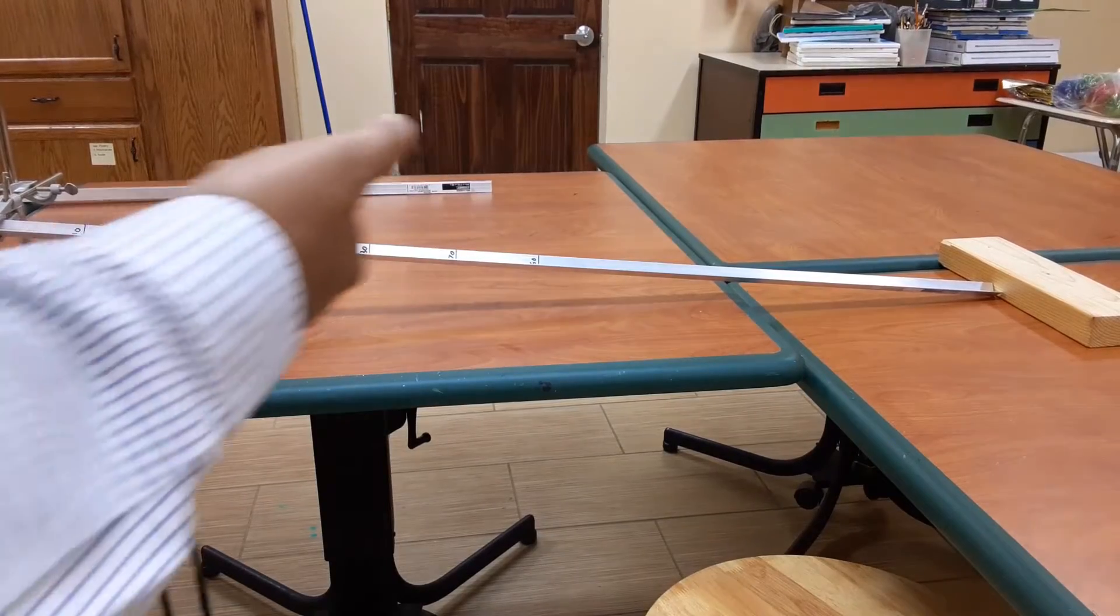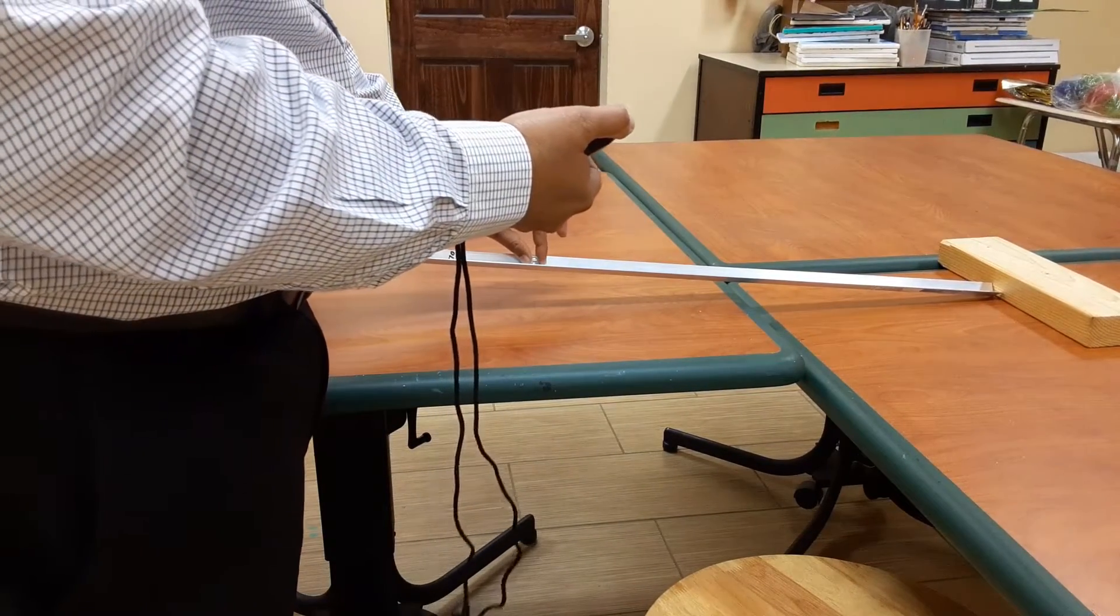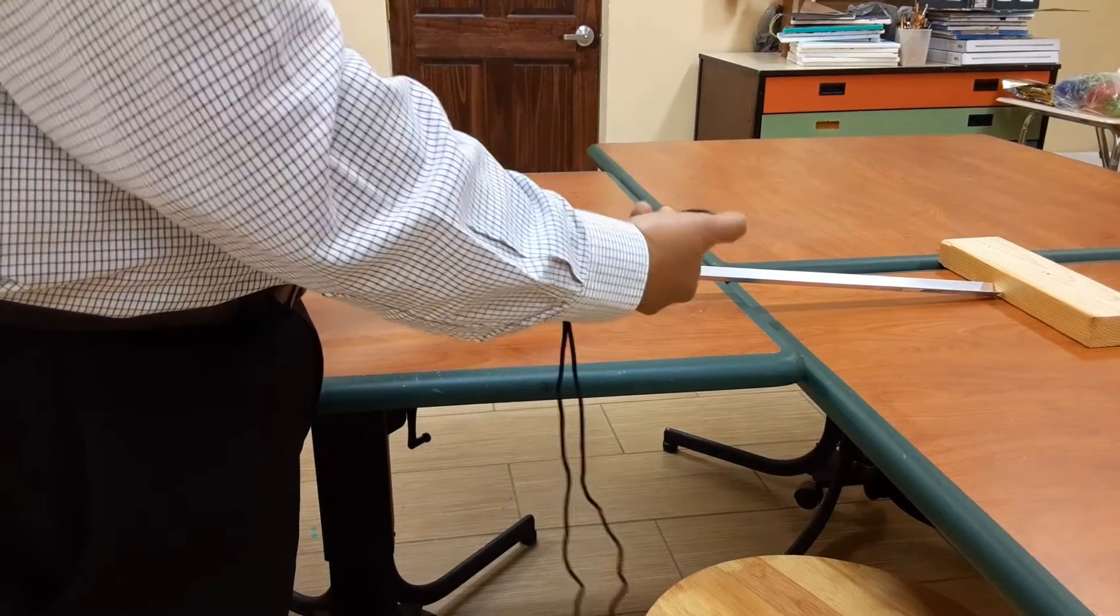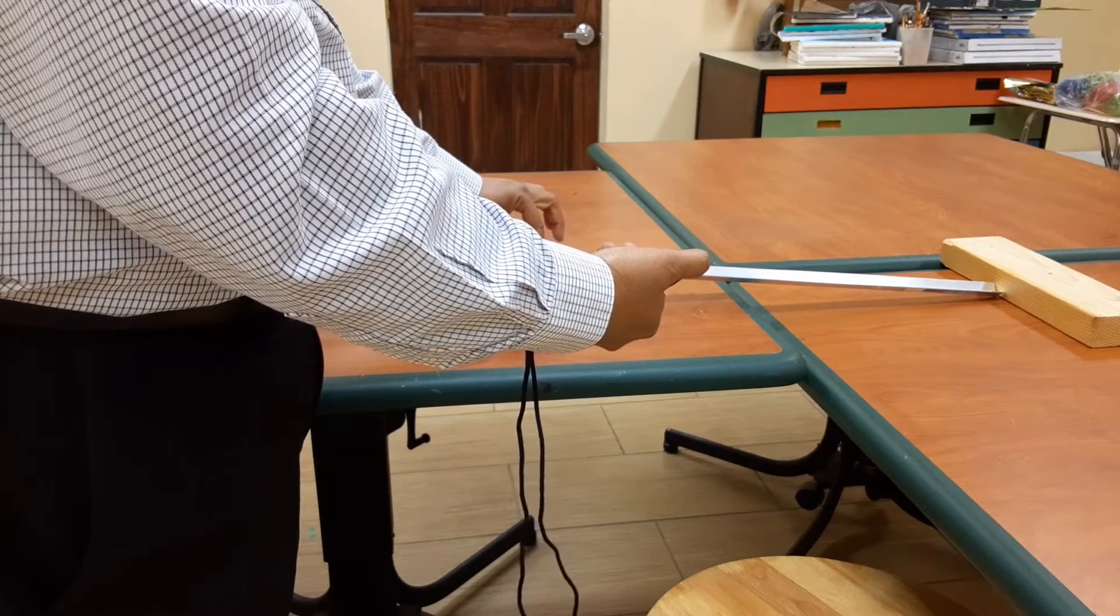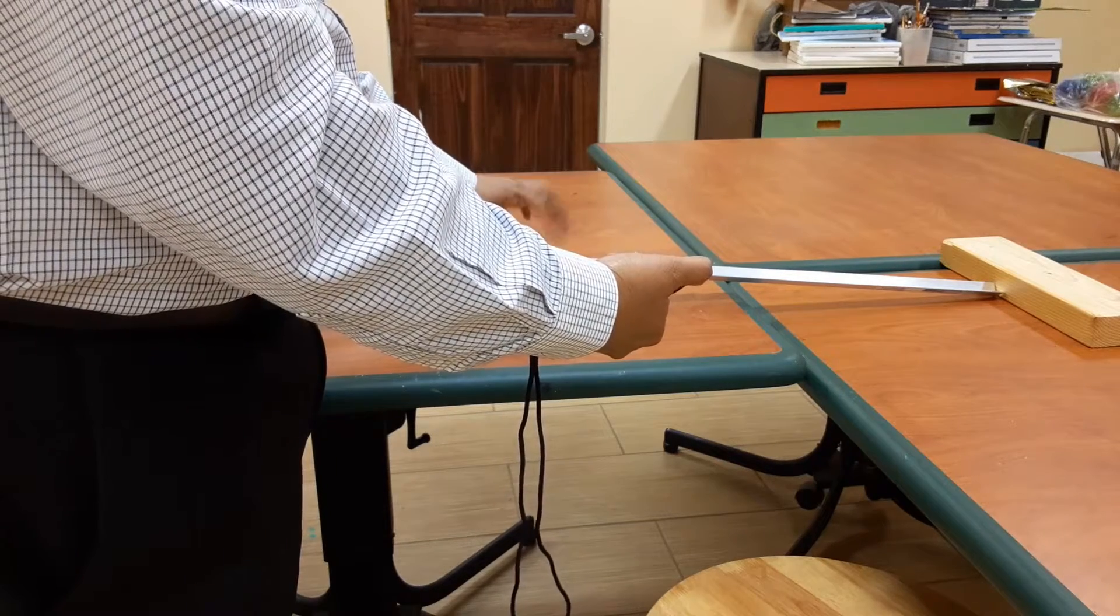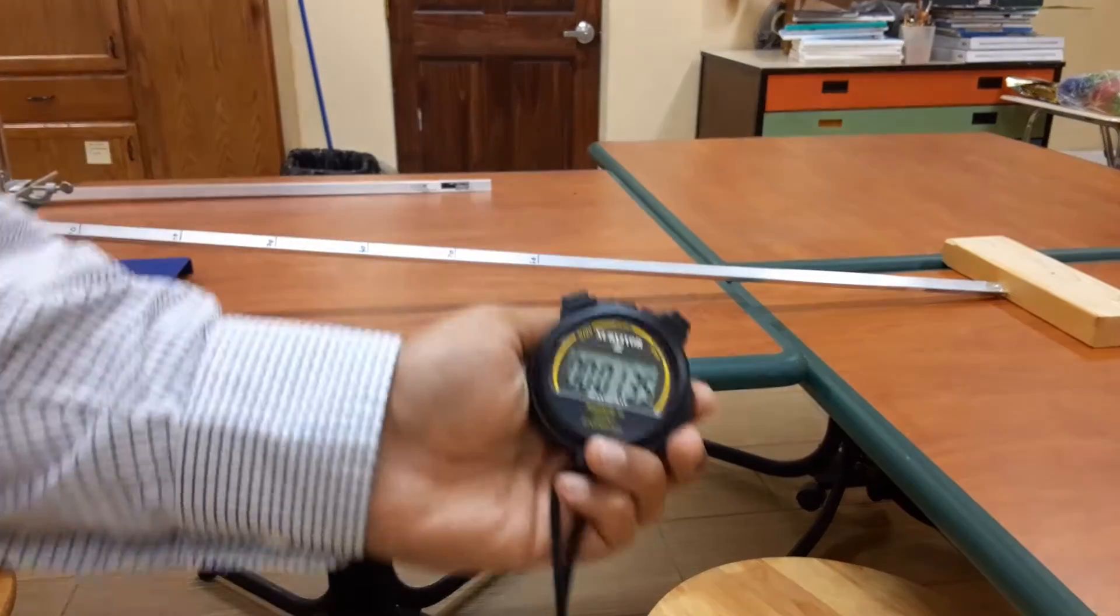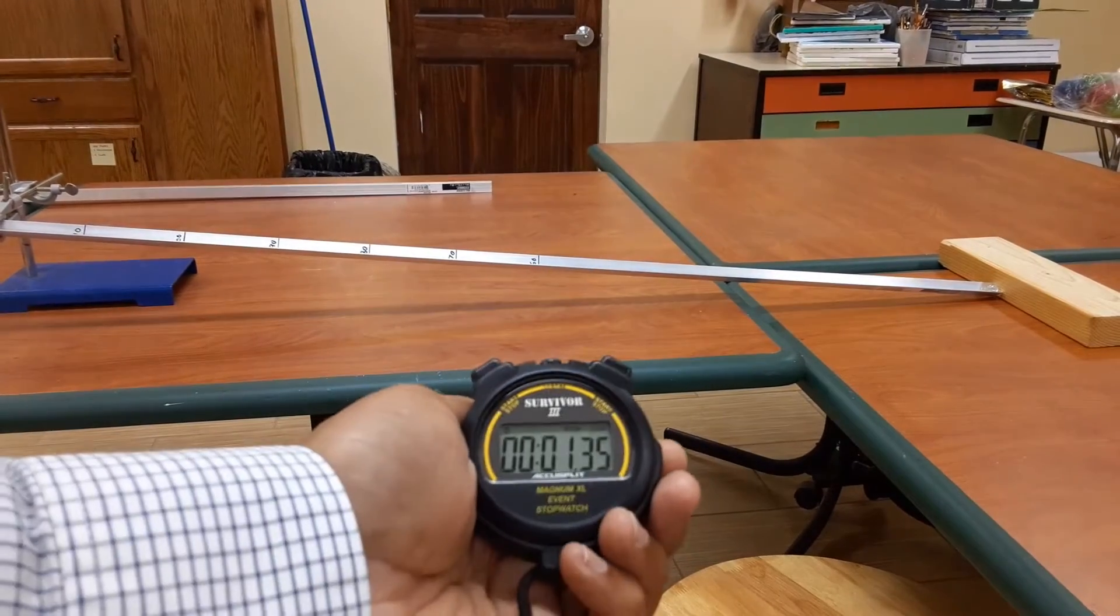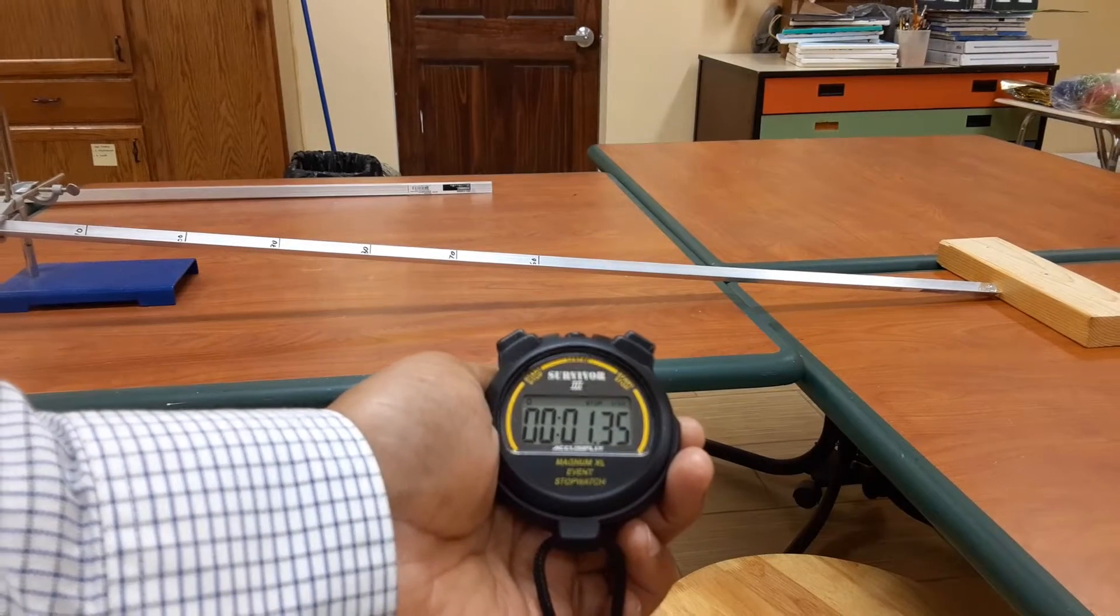So starting with L is equal to 60 centimeter or 0.6 meter. So I have a stopwatch. I will release the ball, and I will see how much time the ball takes to go hit that block of wood. So 1, 2, 3. So I can see that the time on the stopwatch is 1.35 second.